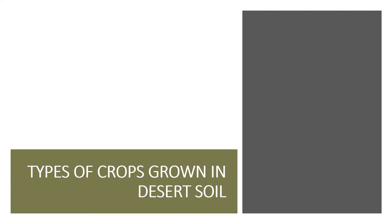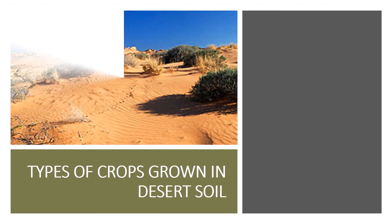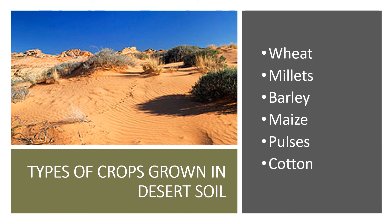Desert soil contains mostly sand. It is found mainly in Rajasthan and Gujarat. The sandy soil cannot hold much water and therefore it is not fertile. The crops grown here are wheat, millets, barley, maize, pulses and cotton.